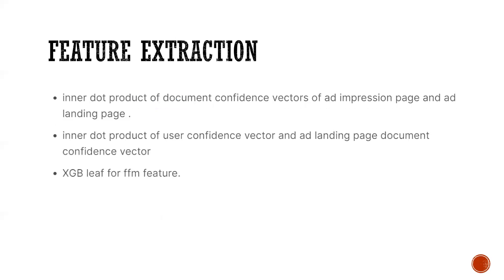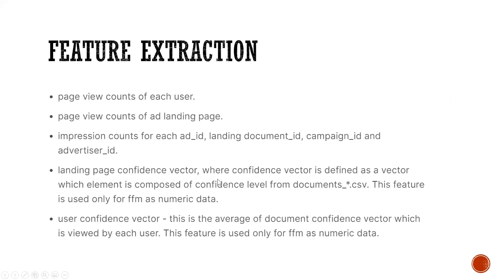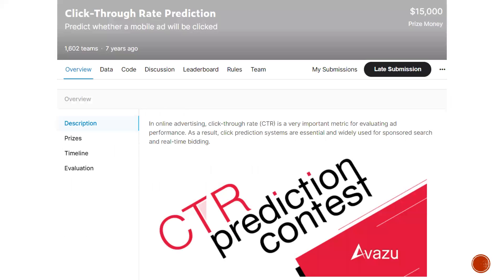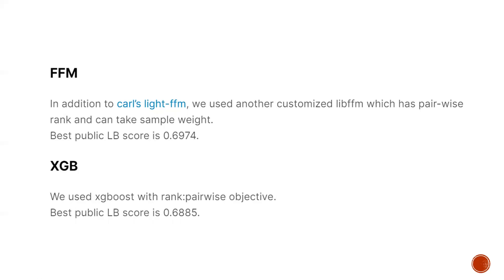What I like most about this competition's solution is how they aggregate and learn user preference vectors from the user's historical reading behavior. Time as a continuous numerical feature would also be helpful here, since users have different content preferences at different times of day.